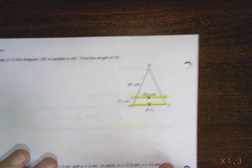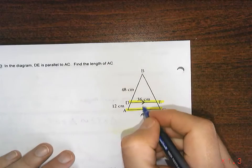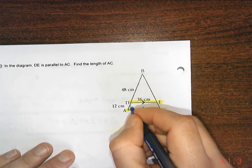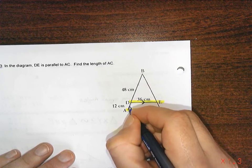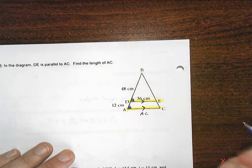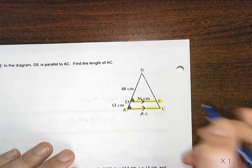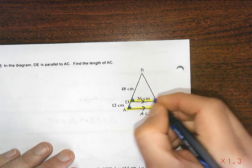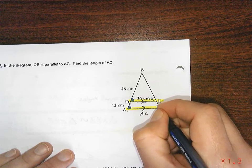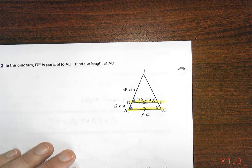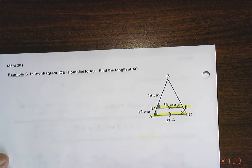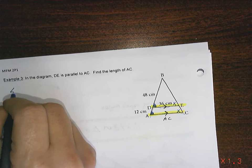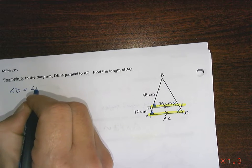So back to our question. We have two parallel lines and there's your transverse. So this is an F pattern. This angle is going to equal this angle. And here's my backwards and upside down F pattern going this way. This angle will equal this angle. So what we know is angle D equals angle A.